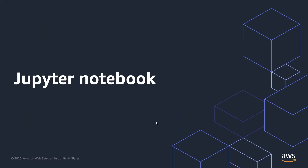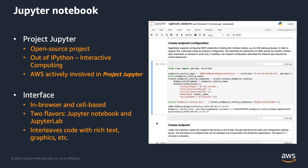Jupyter Notebook is an open source project that came out of the IPython project. The IPython project is a group of developers trying to develop interactive computing capabilities, and they found that one component — Jupyter Notebook — was much more useful across many different areas. They branched that project out around 2014 and created Project Jupyter. AWS is a really active member of the Jupyter community, with members on the steering committee and as an institutional partner for Project Jupyter. It's basically a web application that provides a browser interface.